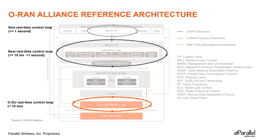Before going any further, it is worth noting that there are three control loops in the ORAN architecture. The first is the real-time ODU scheduler control loop, responsible for real-time processing of radio scheduling information, with a timing of less than 10 ms. Then we have the near-real-time control loop that operates between 10 ms and 1 second. Finally, we have the non-real-time control loop that operates over 1 second.